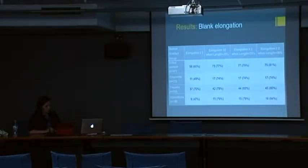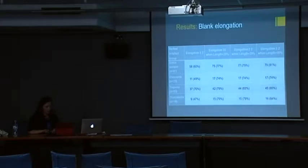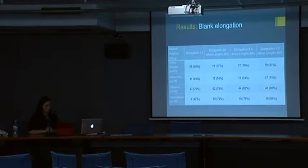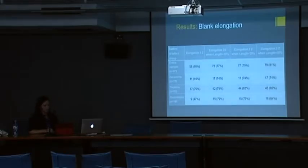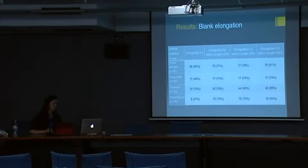Starting with blank elongation: only 60% of the complete backed artefacts I analysed had elongation index values of 2 or greater. This isn't entirely unexpected, given that backing removes parts of the flake. From the data, crescents and truncations tended to be less elongated than the other forms. Given that backing removes length in all of these cases, I decided to explore how the proportions of elongated backed artefacts change when the length is increased to account for material removed by backing.